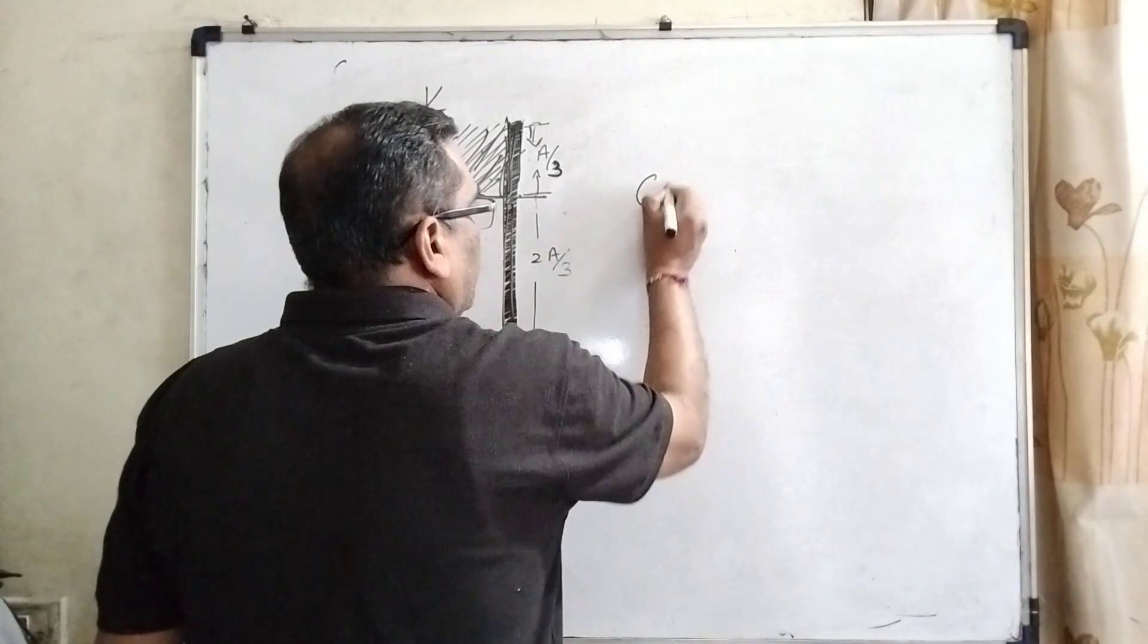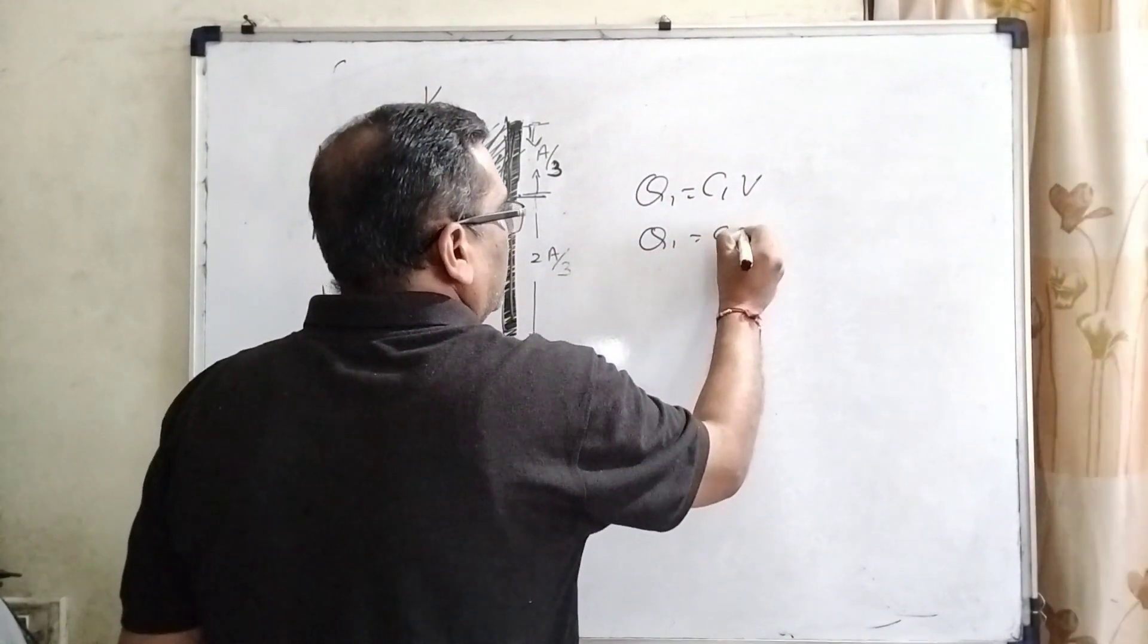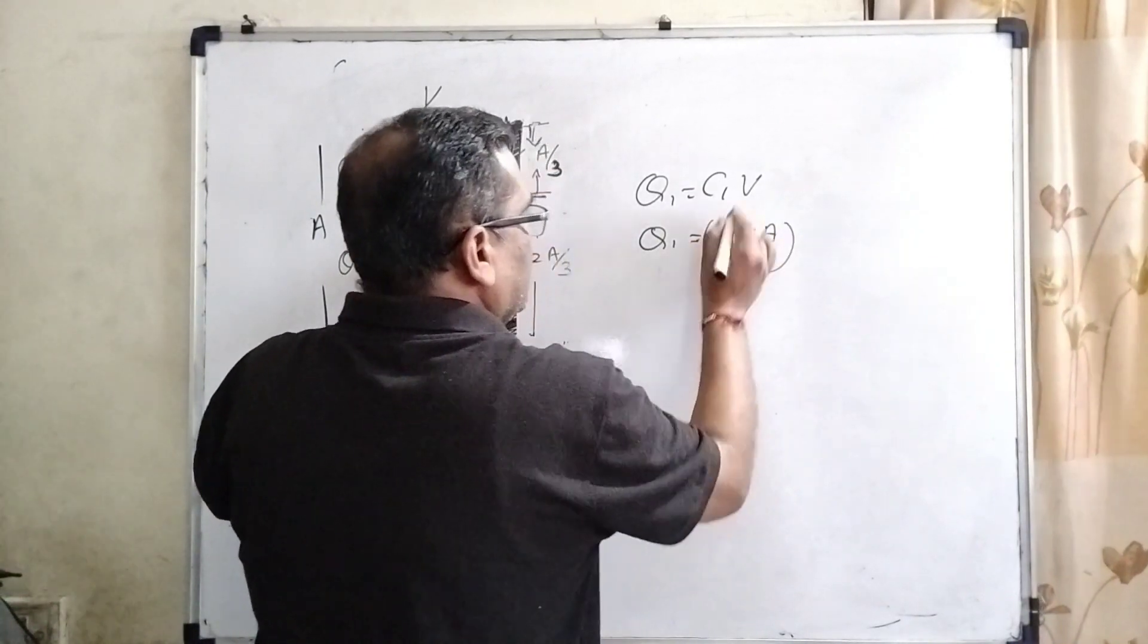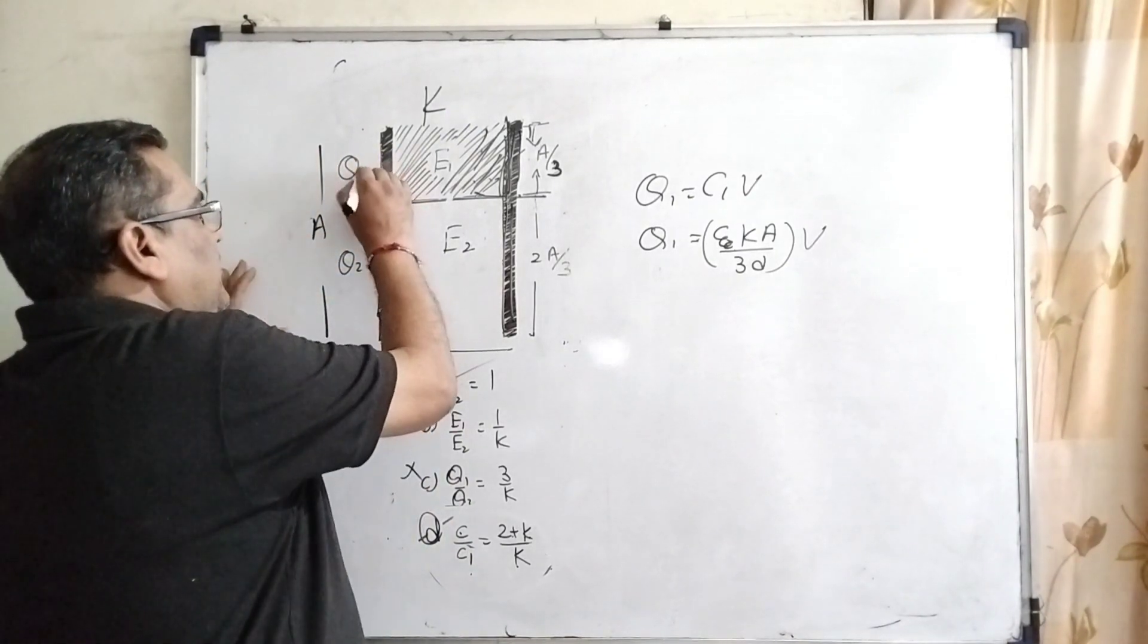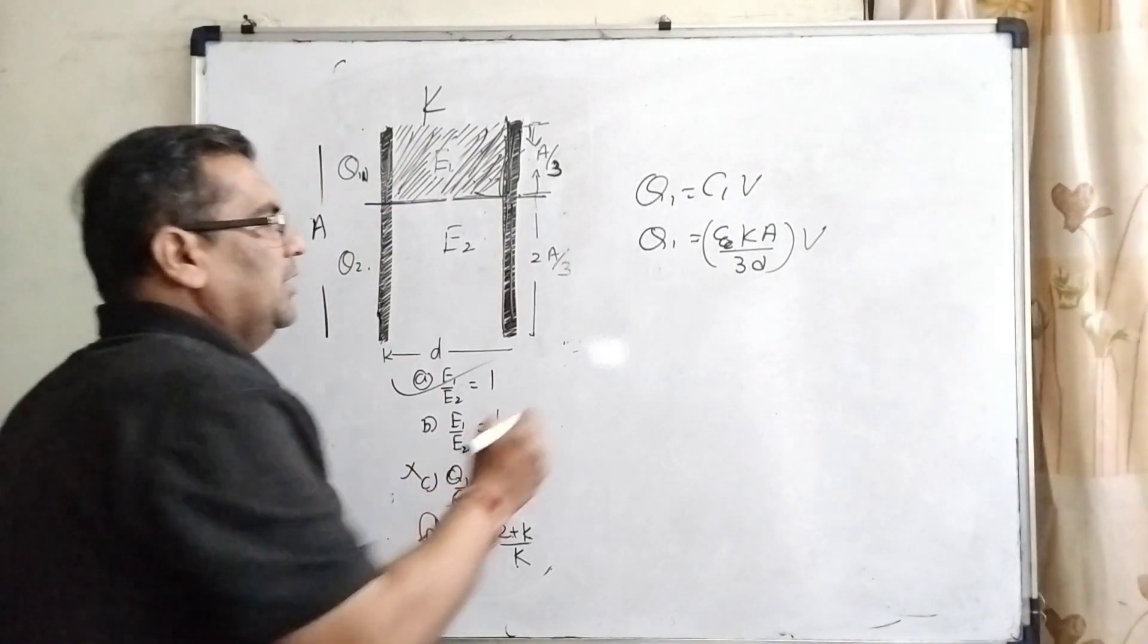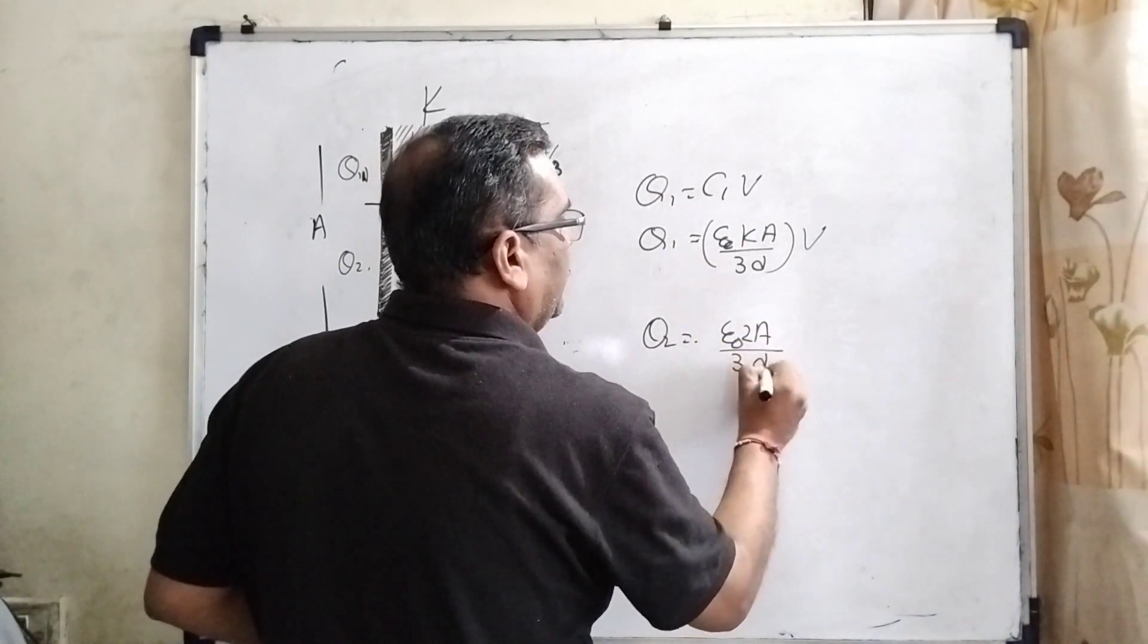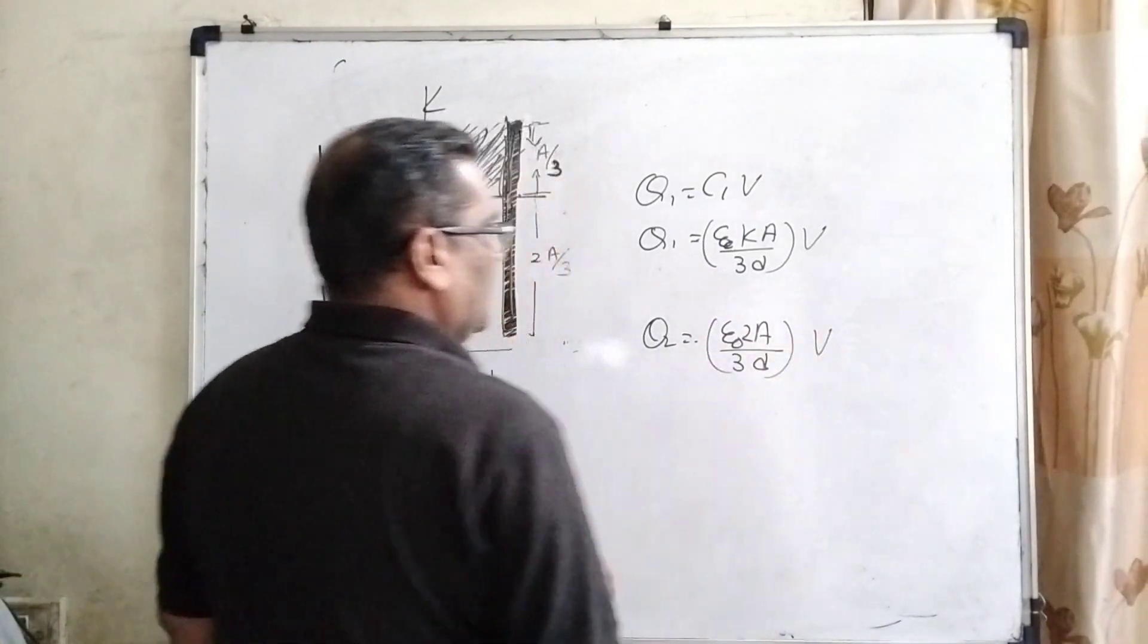Now for Q1, Q1 equal to C1 times V. And what is C1? Epsilon naught K A by 3d times V. So Q1, this charge is given only to that portion which we have used with the dielectric constant K. And now Q2, epsilon naught 2A by 3d times V. This is Q2 and potential is V.